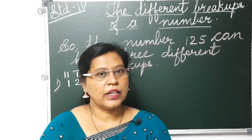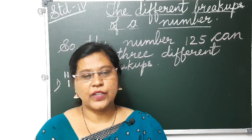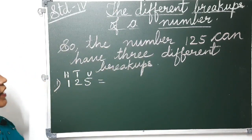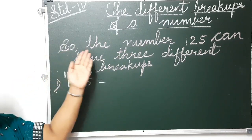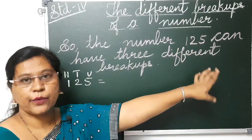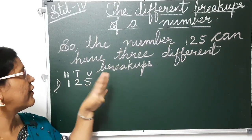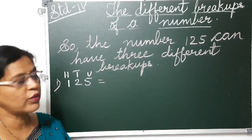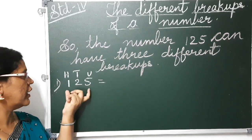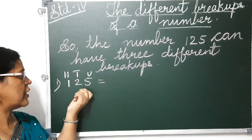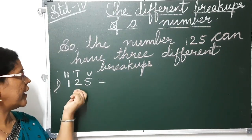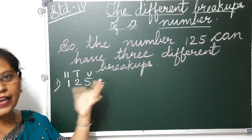Now first we are going to learn about 3-digit numbers — the break up of 3-digit numbers. You can see here the different break ups of a number. In your textbook, the example given is that 125 can have 3 different break ups. In this number there are 3 values: units, tens, and hundreds. So 100, 2 tens, and 5 units are there.